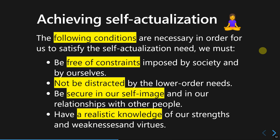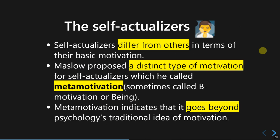Maslow also described that people who reach the self-actualization stage have completely different motivation from those who have not. Self-actualizers have a distinct type of motivation he called meta-motivation, or sometimes B-motivation — being motivation — which sets them apart from everyone else.